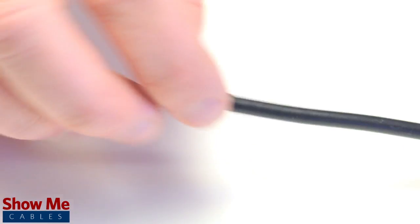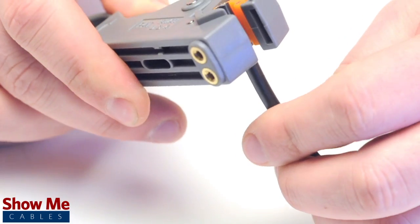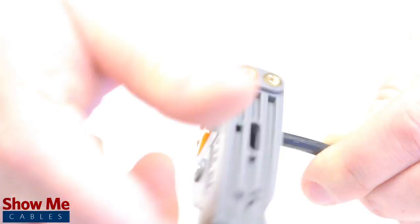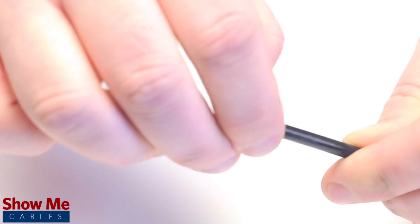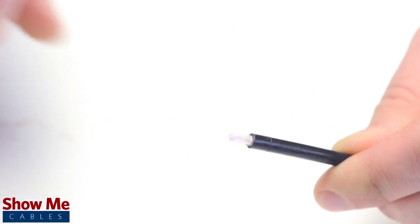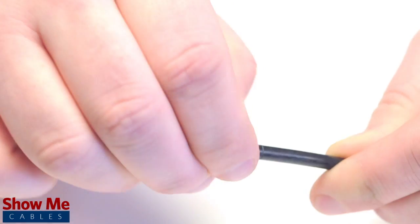Start by inserting the ferrule over the outer jacket of the cable. Then, using your cable stripper, strip back the outer jacket and dielectric. The advantage of using a cable stripper is that it will strip back the jacket and dielectric at the same time.